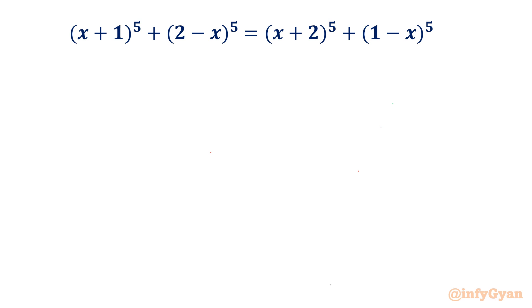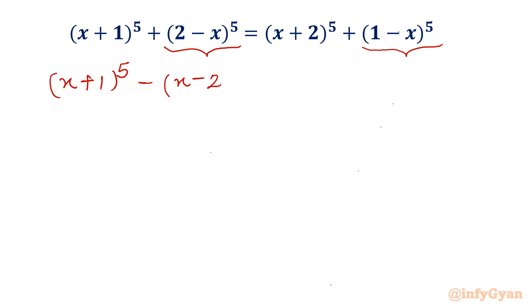Let's get started by considering minus common from the relevant brackets. Once I take minus out, since the power is odd, the minus sign will come outside. So I write (x + 1)^5 as it is, then minus (x - 2)^5. On the right hand side, (x + 2)^5 as it is, and then taking minus out gives minus (x - 1)^5.